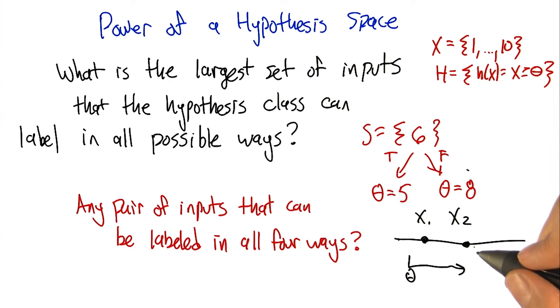There's no way to label anything to the left of the line as negative, ever. Because you're requiring that x is greater than or equal to theta to be positive. So you can never label anything to the left of that line as negative.